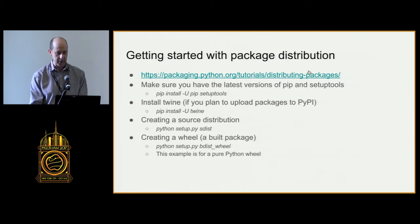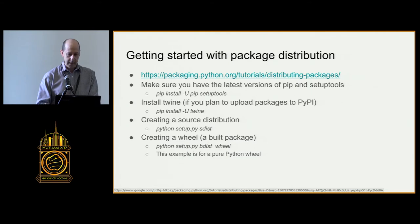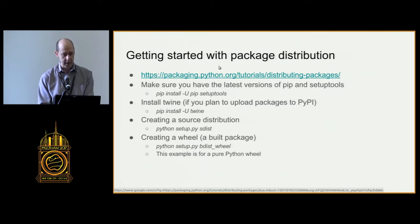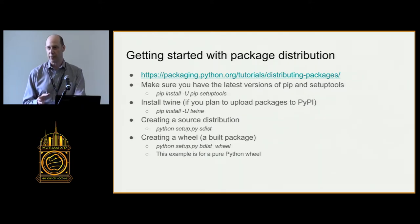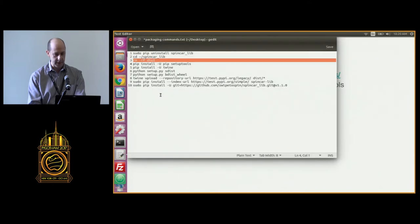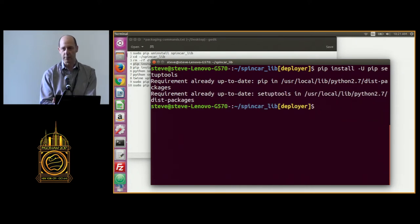There's pretty good documentation and a tutorial — these slides will be available to anyone who wants them. There are really just a couple of things you need to install to do packaging. The first two are pip and setuptools. We're actually going to use pip to install pip — with the -U flag, we're upgrading to the latest version. If you don't already have pip, you can use easy_install to get it. Running pip install -U pip setuptools — it's telling me I already have the most up-to-date versions, so I'm good to go.